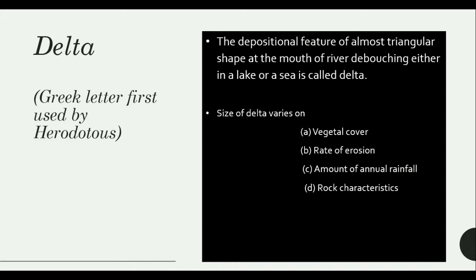In today's video we are going to learn about Delta — how it forms and what other types there are. Now where does this word 'Delta' come from? It was first propounded by Herodotus. It is basically a Greek word which looks like a pyramid or a triangular shape.